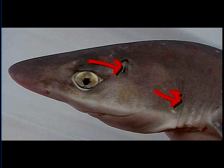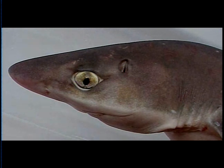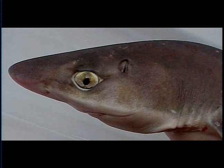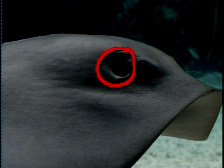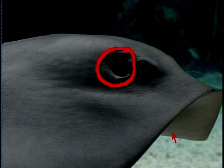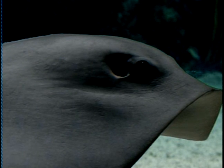On the ray picture, which we can go full screen on: you can see the big spiracle here behind the eye, but their gills are on the bottom. So the water goes in the top and out the bottom.